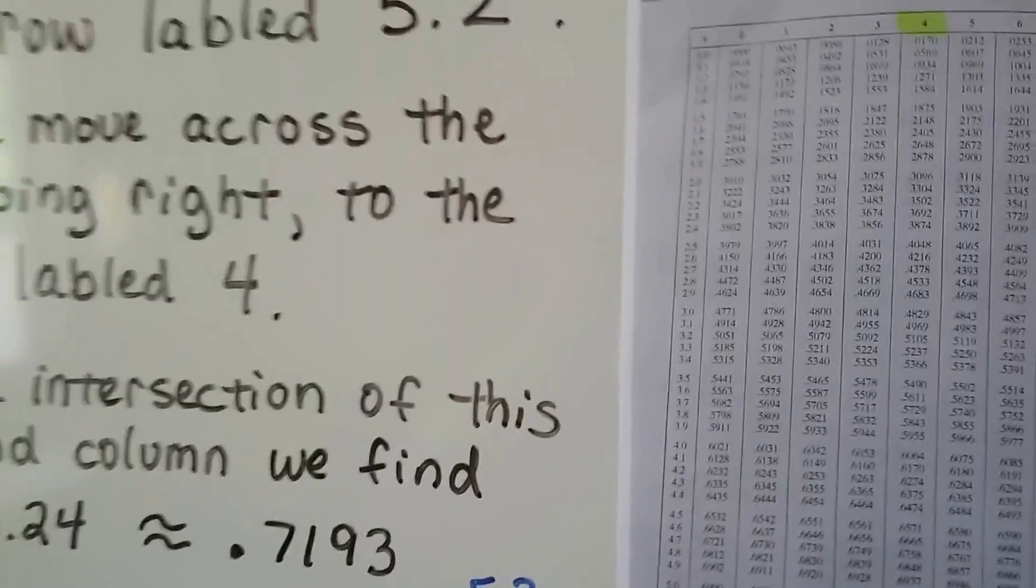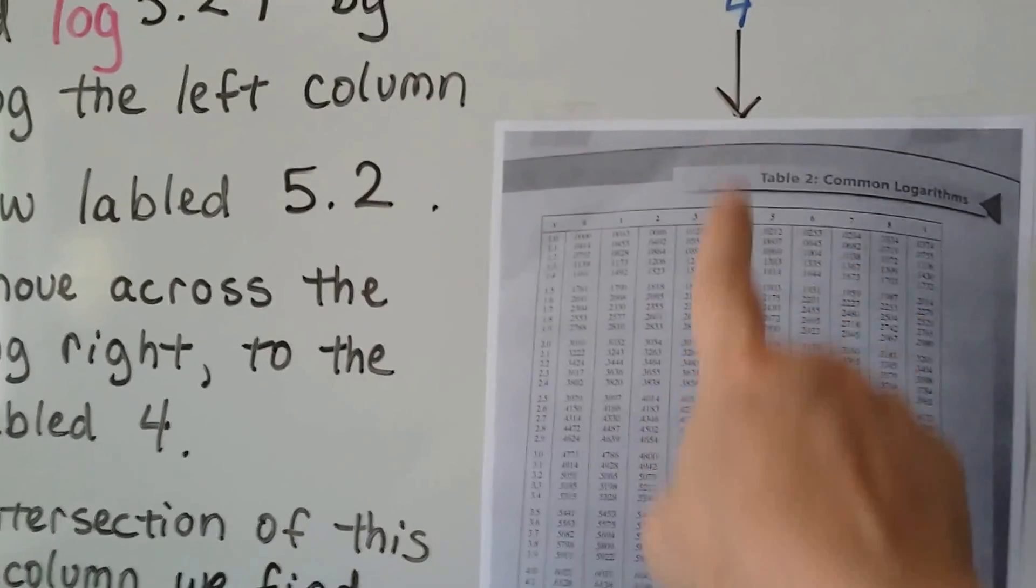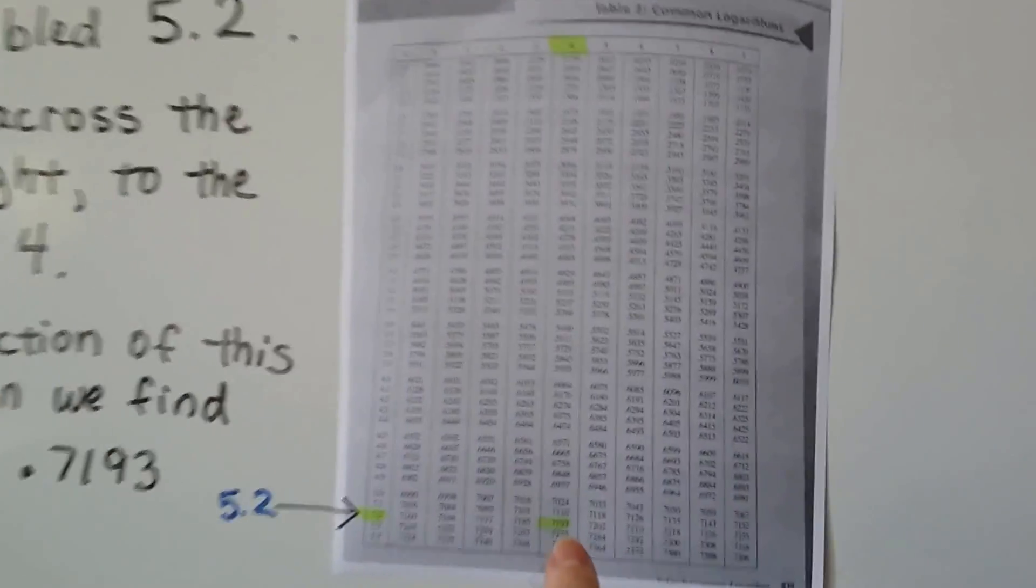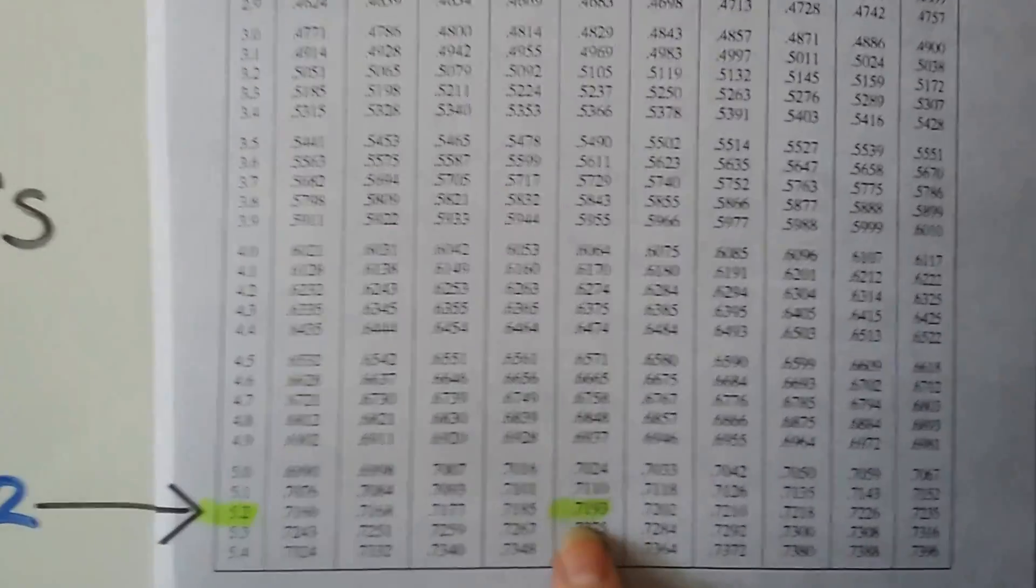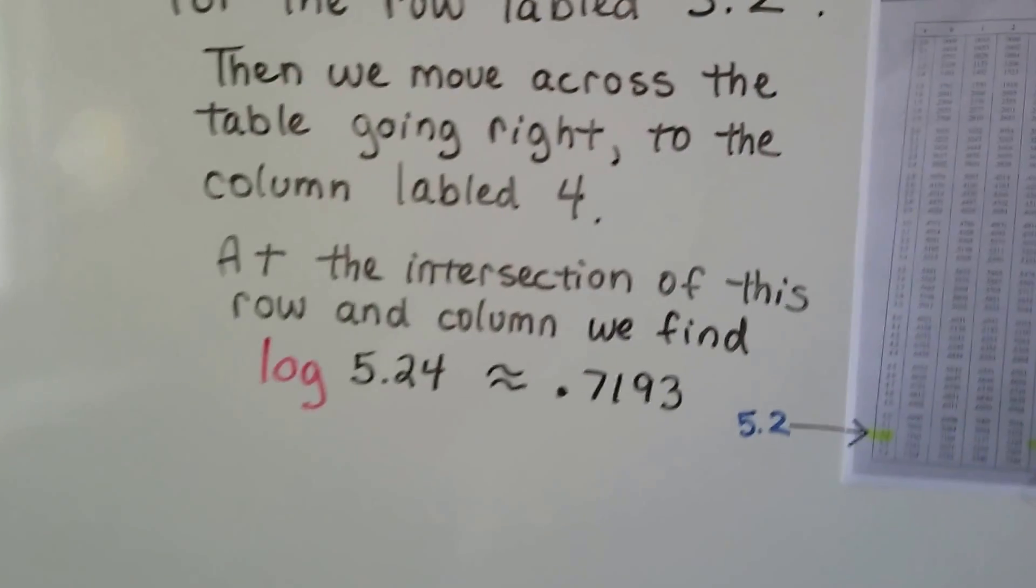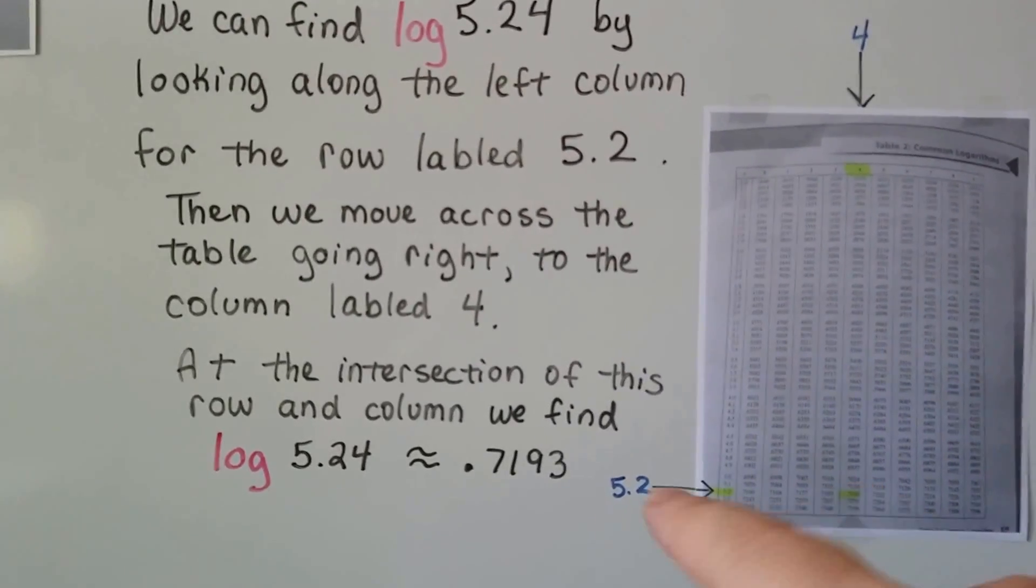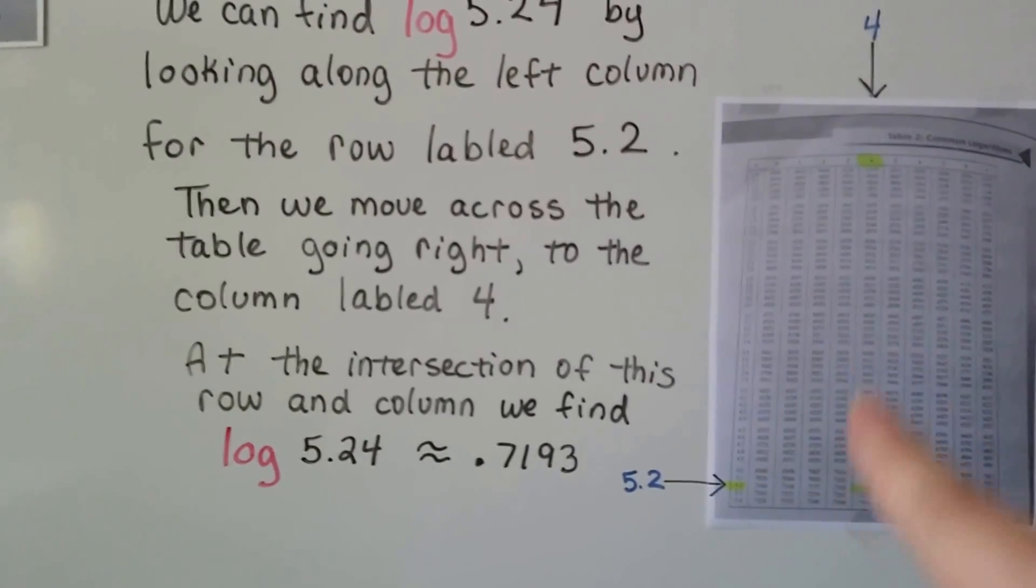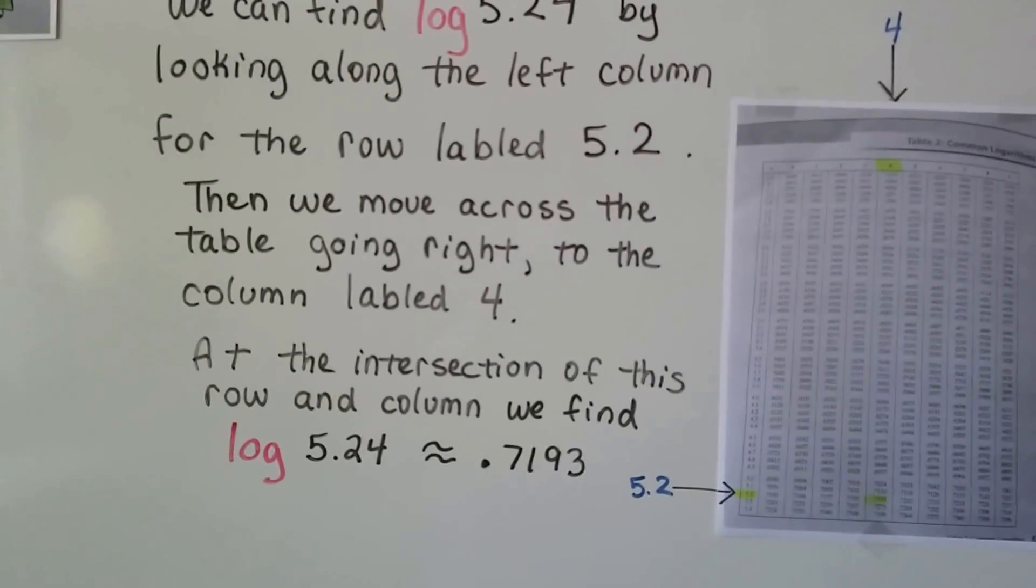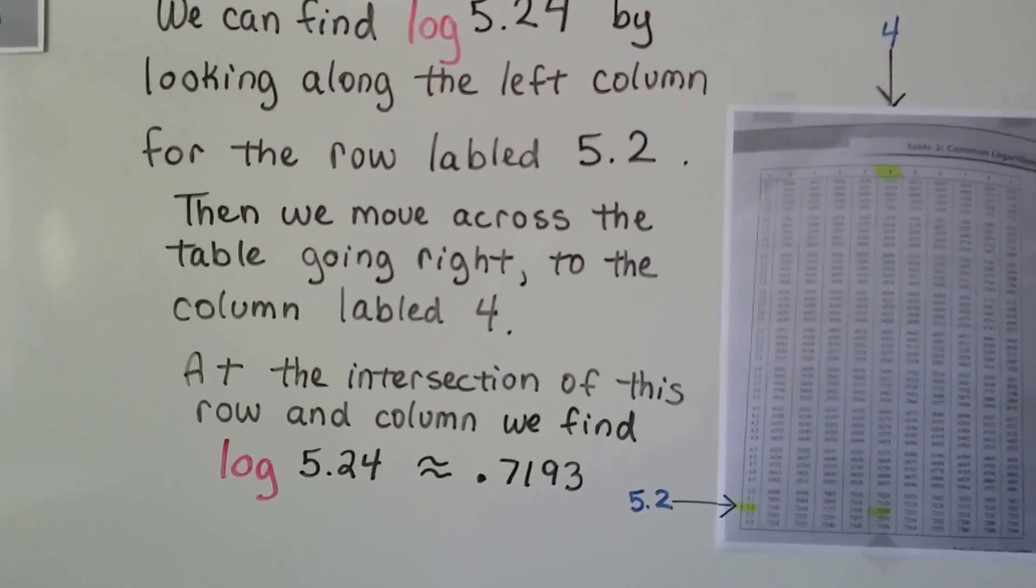We're looking for 5.24. We find the 4 over here. So we find 5.2 here and the 4 here and we find out where they meet, where they intersect, at 0.7193. So we go along that left column, find the 5.2, and then we move across going to the right until we find the 4. At the intersection of this row and column we find log 5.24 is approximately 0.7193.